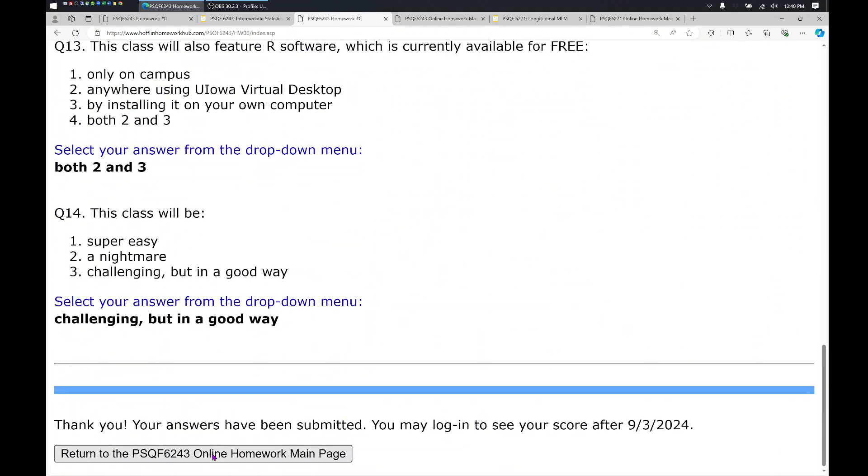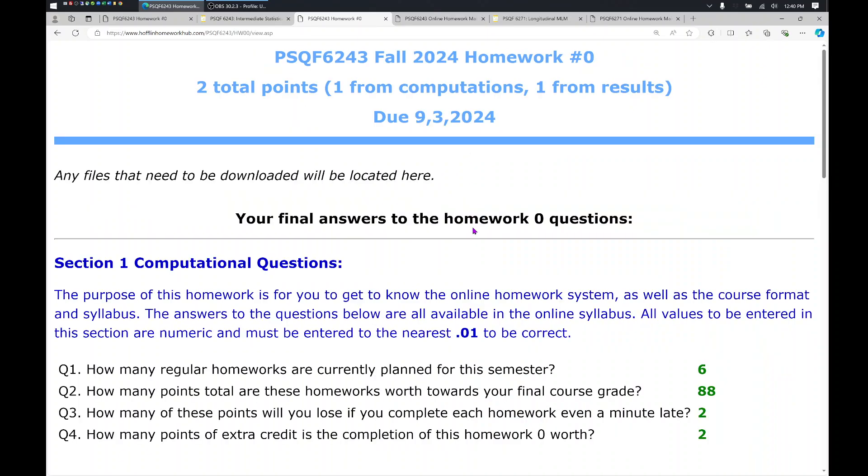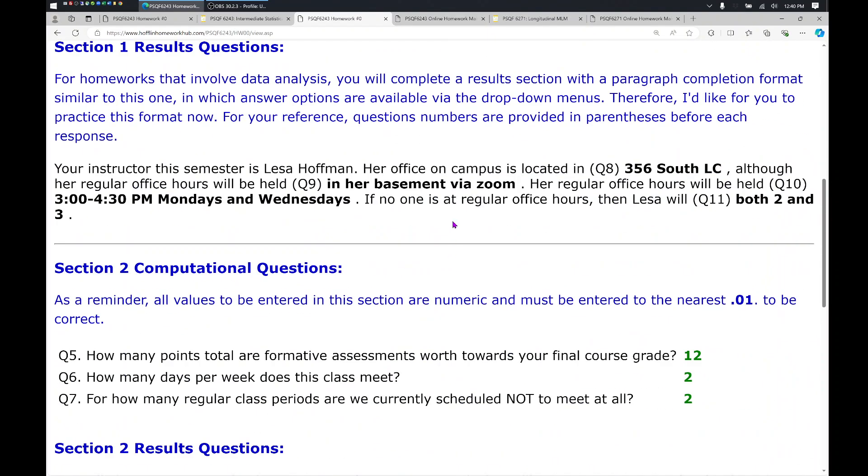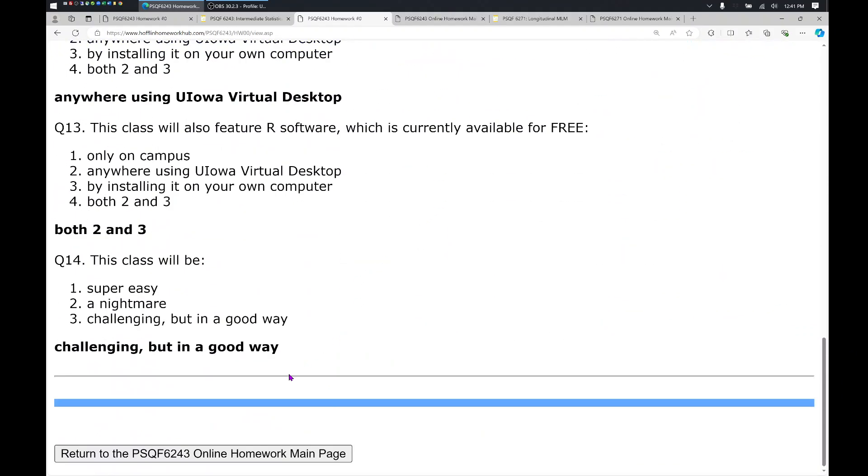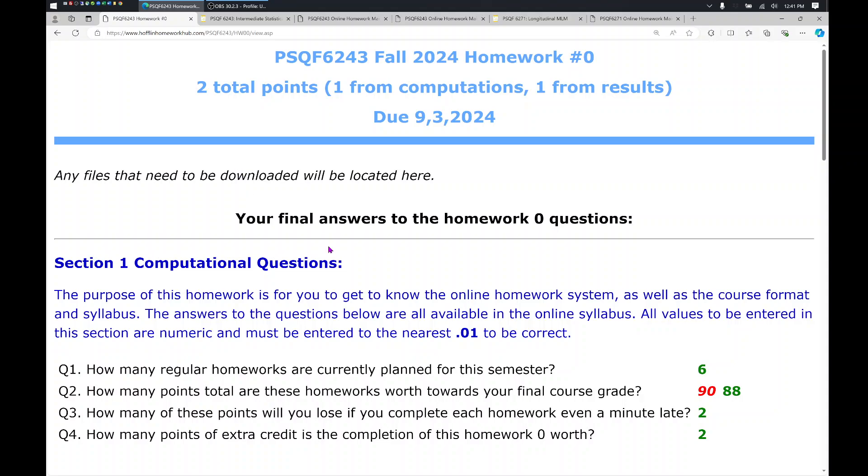So at the bottom of the page, then, it tells you when the due date is. That's when you can see all of your feedback. For now, I'll go back to the main page here. And previously, it had said homework zero, begin or continue. Now that I have submitted it for a final grade, I only had the choice to view my answers. And so if you click on this link before the due date, you will see the same format that you saw the last time. However, if you click on it after the due date, you will see all of your feedback.